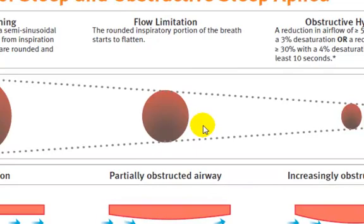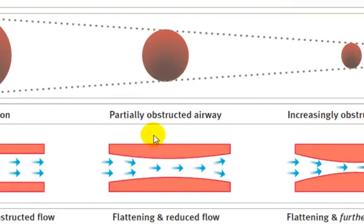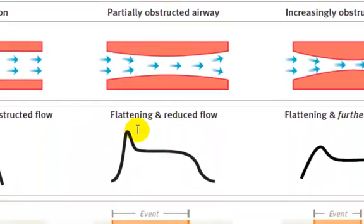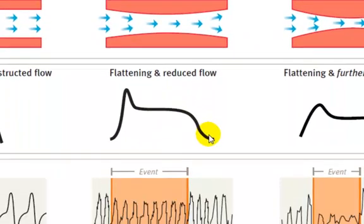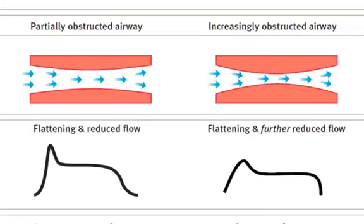A slight narrowing of the upper airway is indicated by flow limitation. Here you see a partially obstructed airway and a flattening on the inspiratory waveform. By definition, any time you see a plateau or flattening on the inspiratory waveform, that would be a flow limited event.